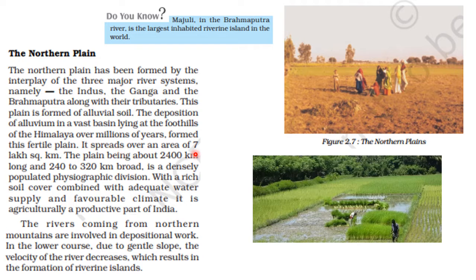It is spread over an area of 7 lakh square kilometres, being about 2400 km long and 240 to 320 km broad. It is a densely populated physiographic division of India with a rich soil cover, adequate water supply, and a favorable climate. It is a very productive agricultural part of India, where large varieties of crops are cultivated, and the level land also favors construction activity.